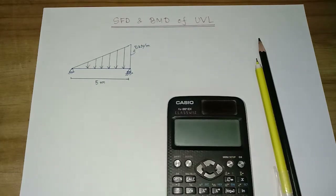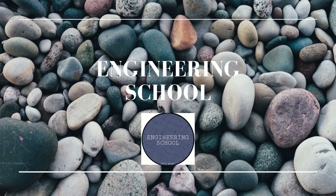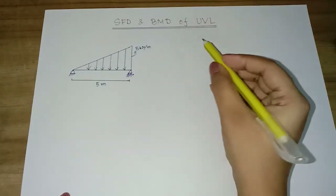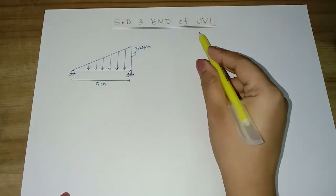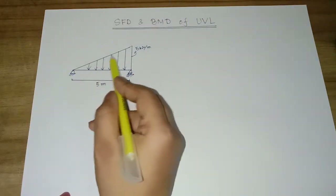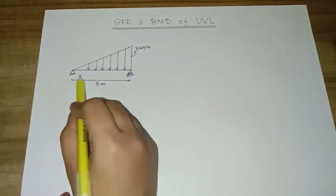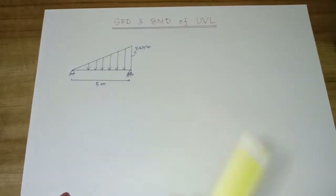Hi everyone, welcome to Engineering School. Today I will draw the SFD and BMD of a UVL. UVL is Uniformly Variable Load. The UVL is 5 kN per meter, and the distance is 5 meters.